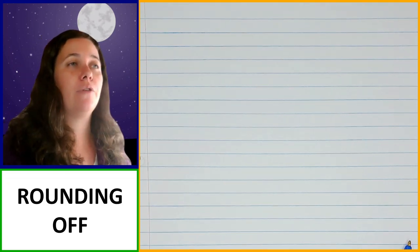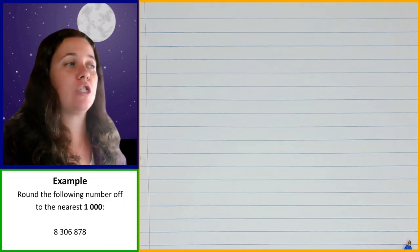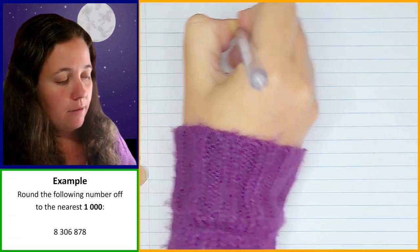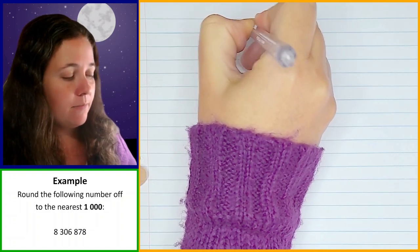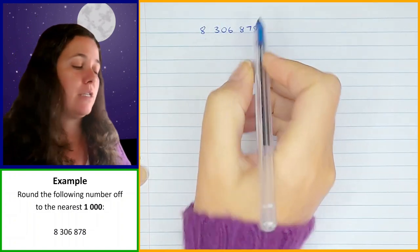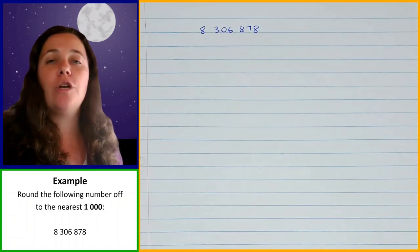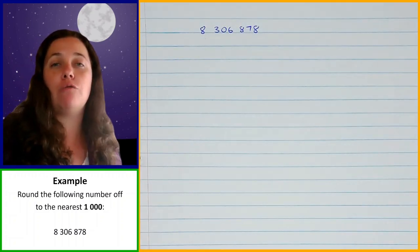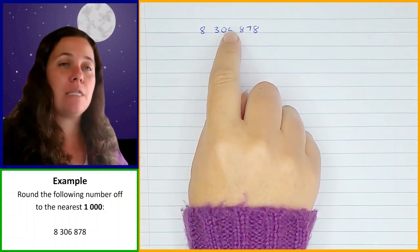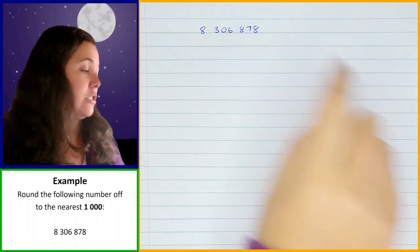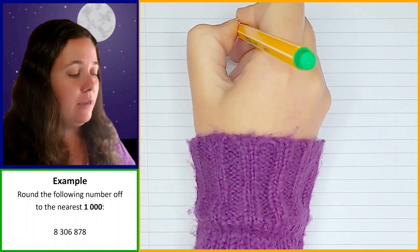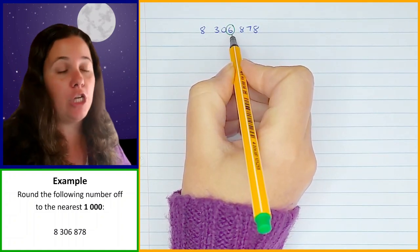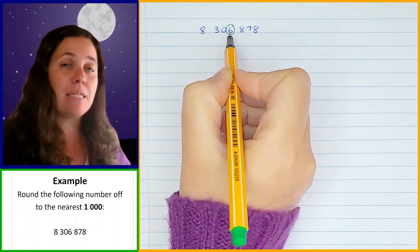The first example we're going to look at is just a normal rounding off question. We've got the number 8,306,878, and we need to round this off to the nearest 1,000. The process you're going to follow is: first, identify which digit in that number is in the position that you need to round off to. We need to round off to the nearest 1,000, so that is the 1,000th position — I need to identify that digit.